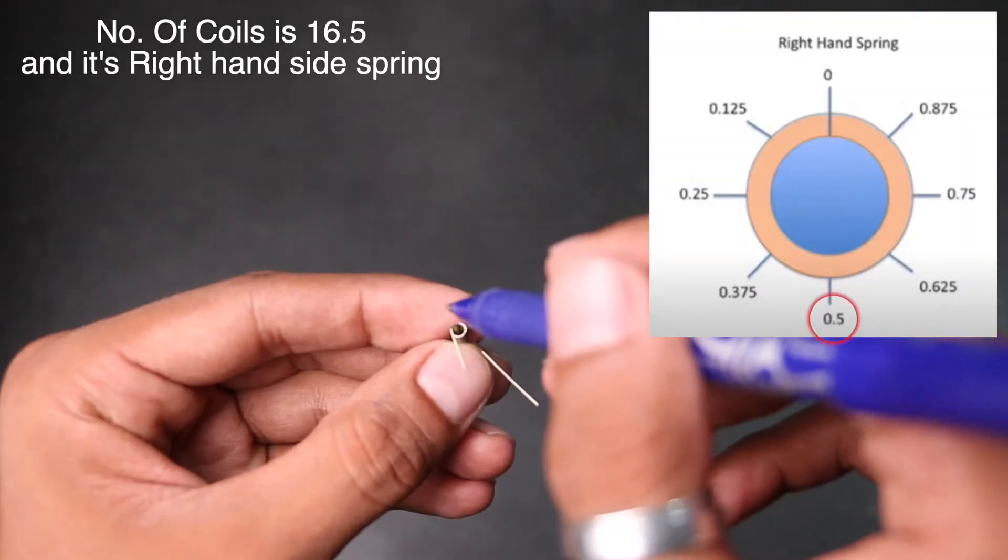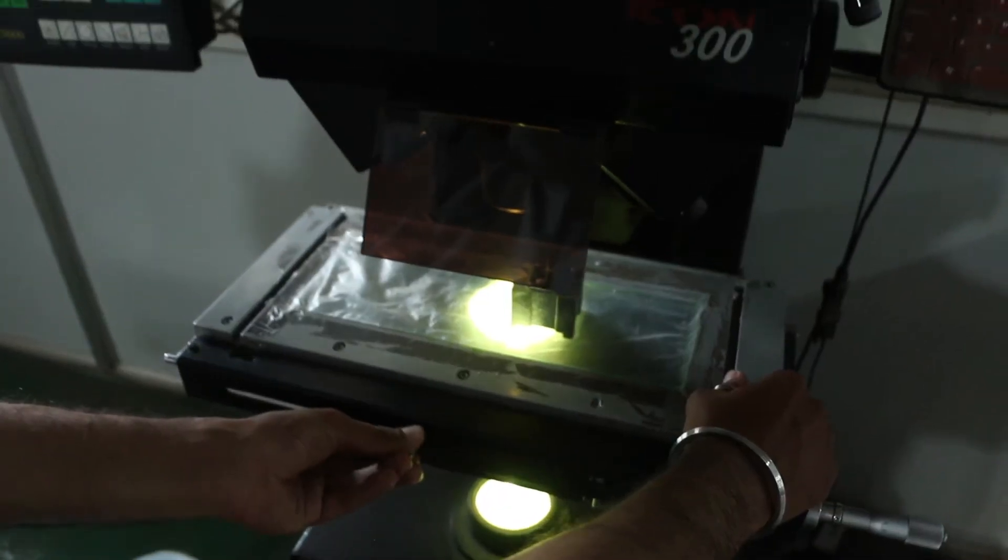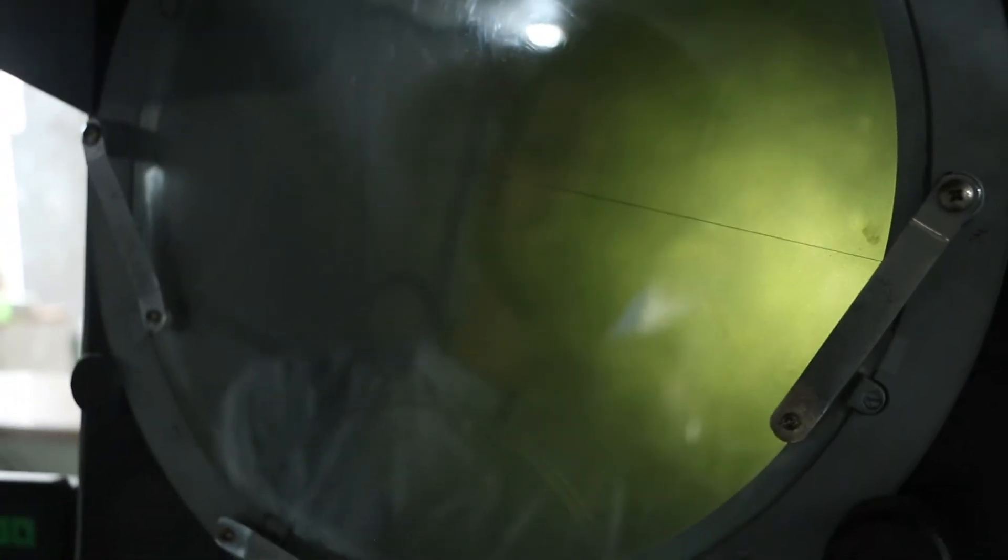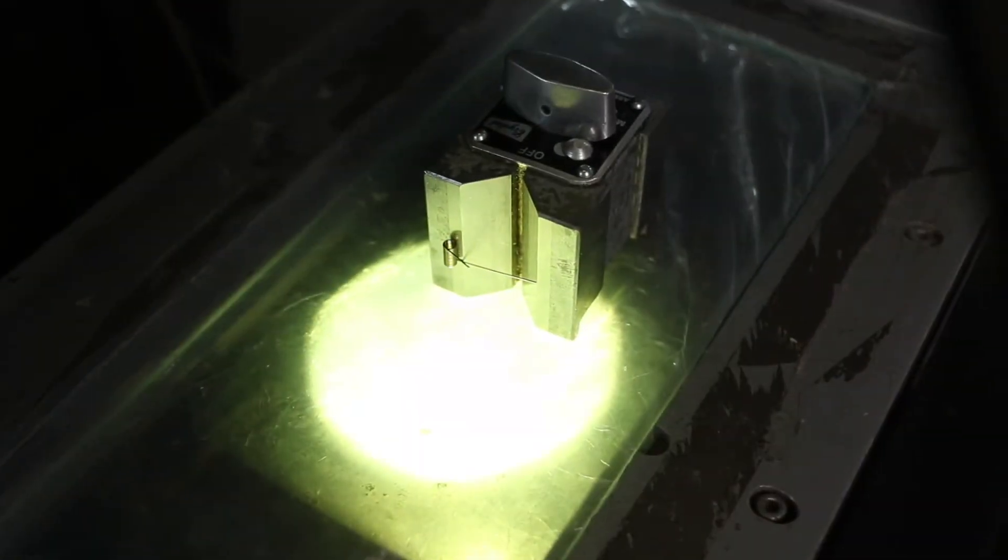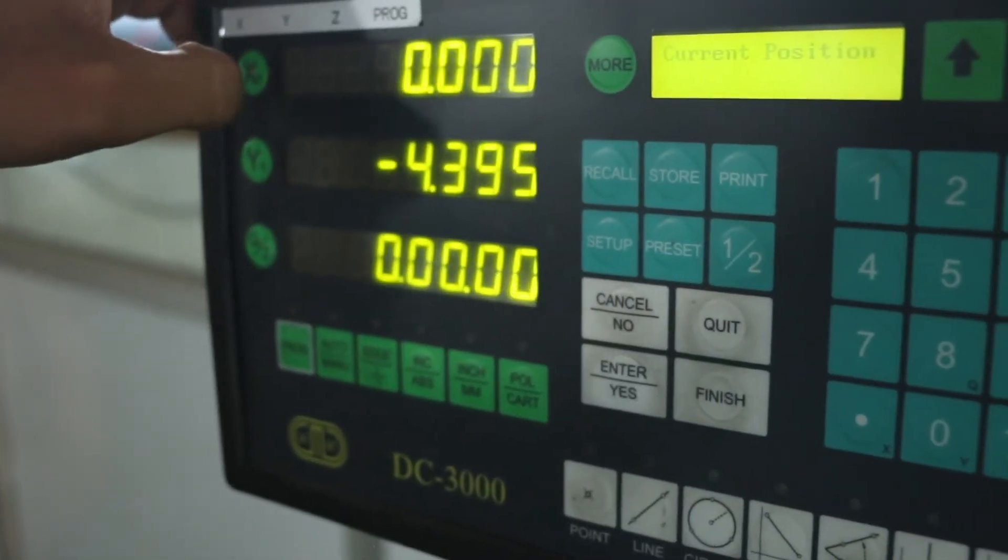This is a right hand spring as it rotates clockwise. To measure the angle, leg length and leg angle accurately we will use profile projector. Place your spring under projection light with the help of magnetic V-block. You can always reset the values when you found the perpendicular angle of your spring.